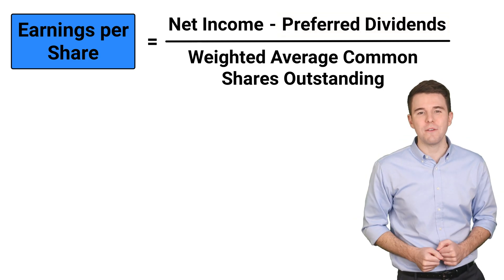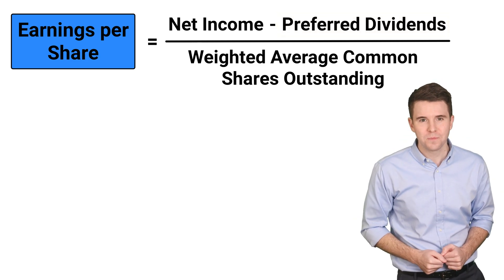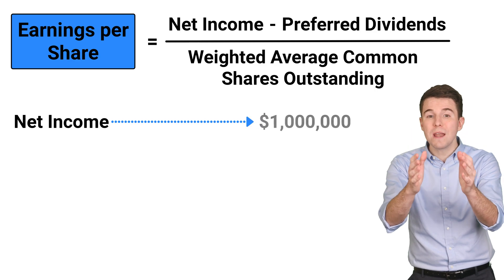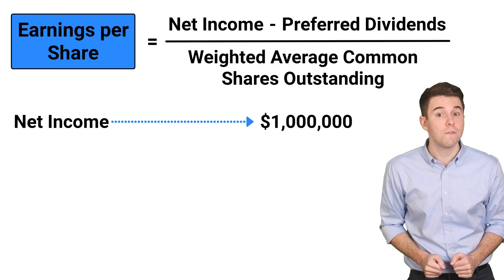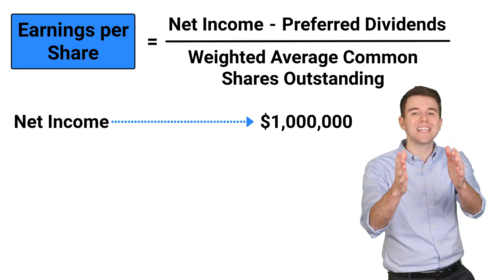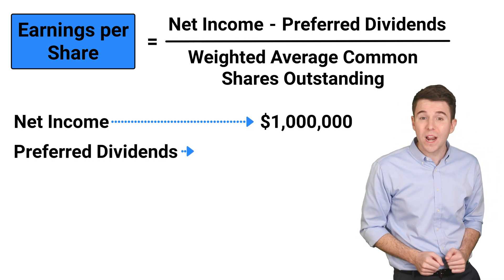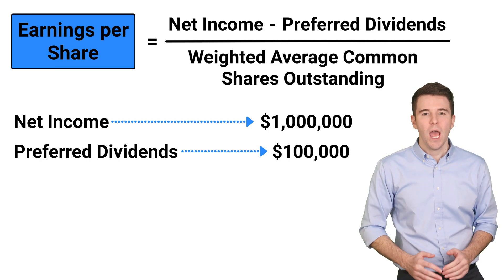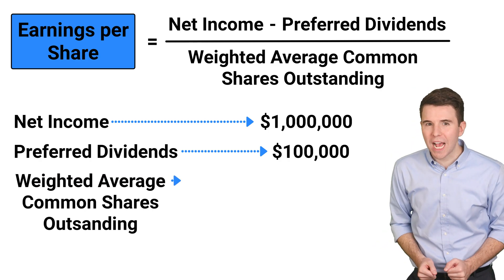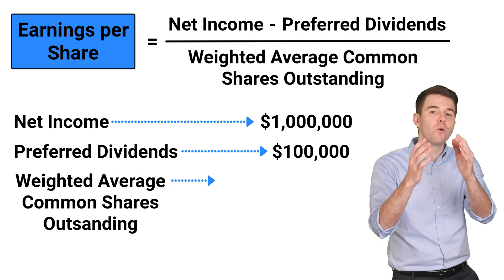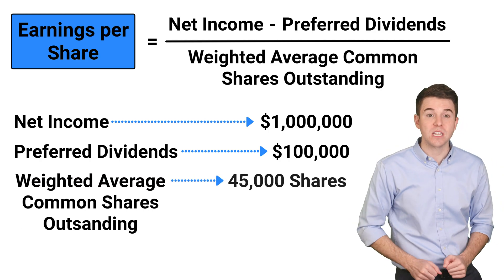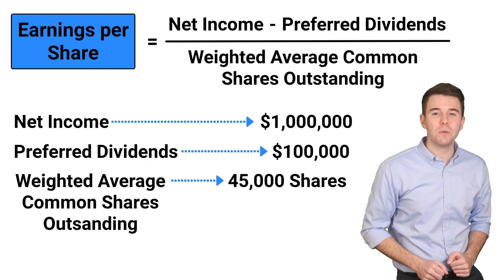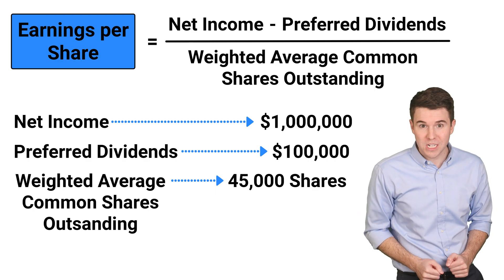Now let's bring this to life with an example. Assume a company earned net income of $1 million for the year. It also declared and paid $100,000 of preferred dividends. Weighted average common shares outstanding was 45,000 for that year.